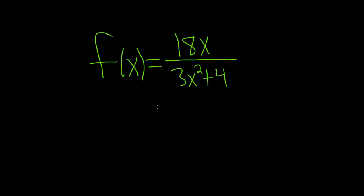In this problem we're given a rational function and we're being asked to find the horizontal asymptote. Whenever you have a rational function and you're looking for horizontal asymptotes, all you have to do is look at the degrees. The degree is the biggest exponent, so here it's a 1 and here it's a 2.